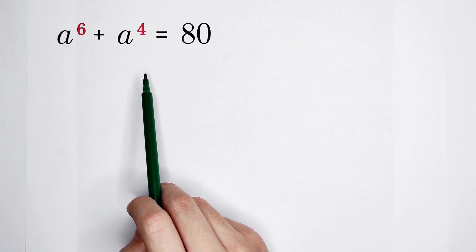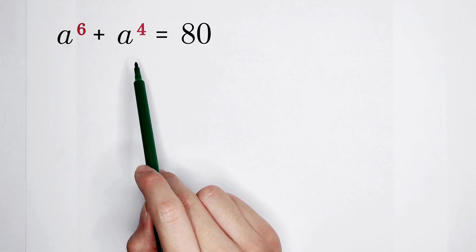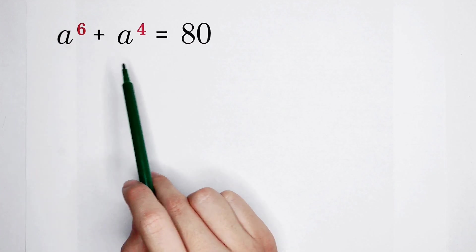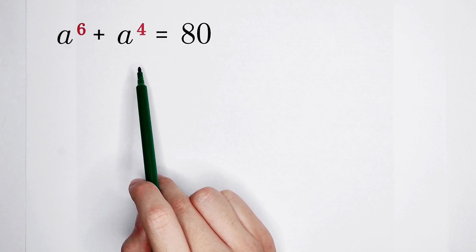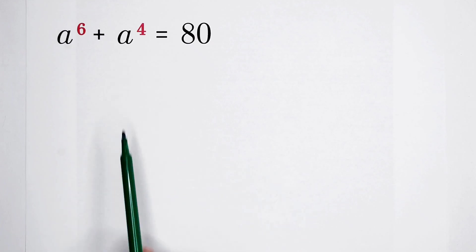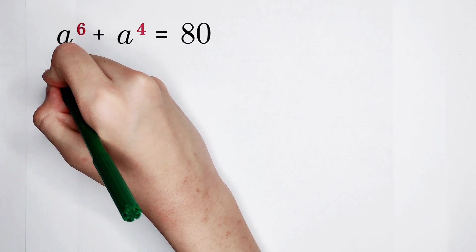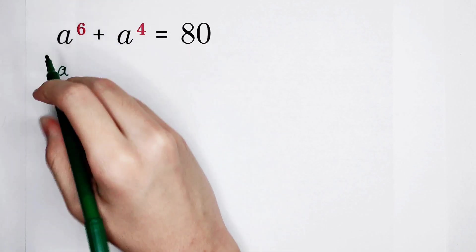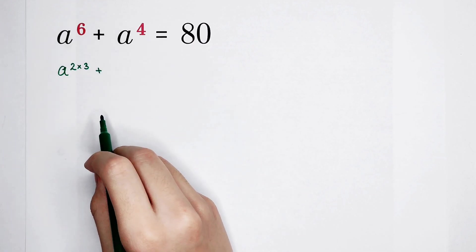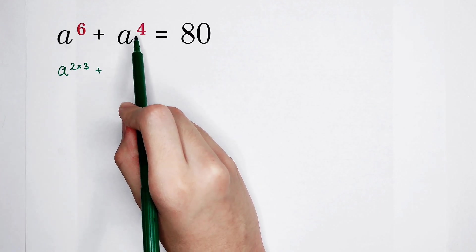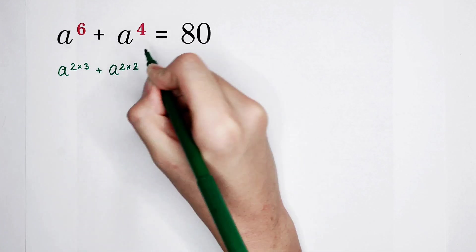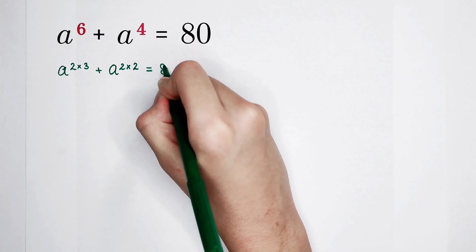By observation, we can find out that 6 and 4 are both even numbers, and the greatest common factor of 6 and 4 is 2. So our first step is to write 6 as 2 times 3, and 4 as 2 times 2. So h to the power of 6 becomes h to the power of 2 times 3, and h to the power of 4 becomes h to the power of 2 times 2, equal to 80.